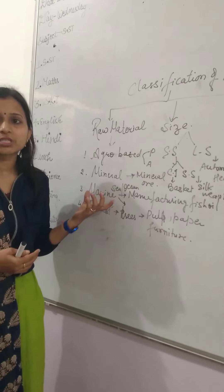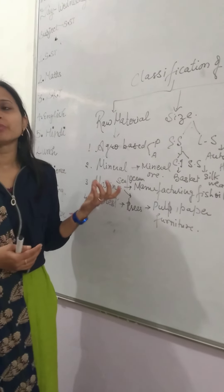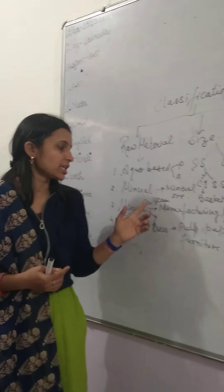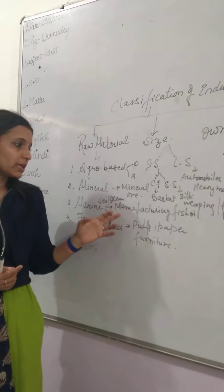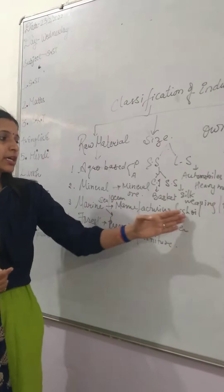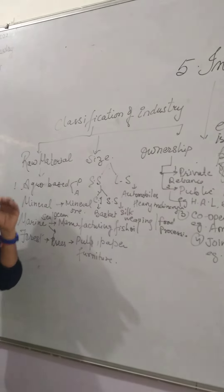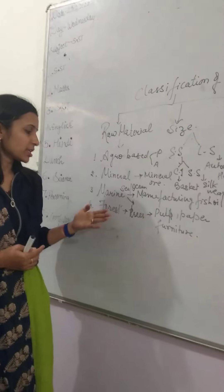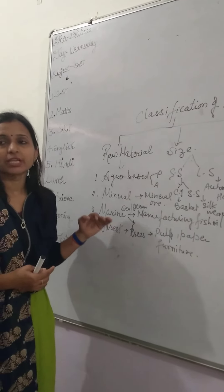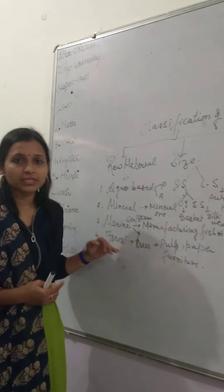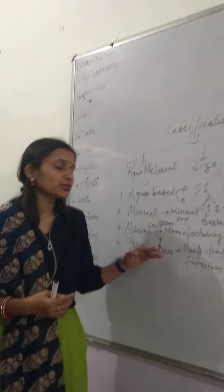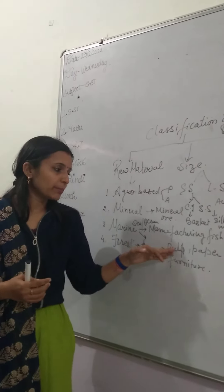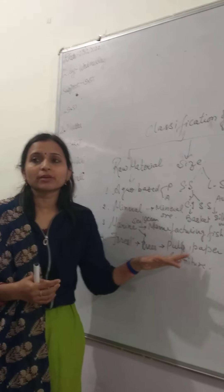The third is marine-based industries, which use raw material that we get from the sea or oceans. The fourth classification is forest-based industries. In this industry, the raw material used is what we get from trees, for example pulp, paper, and furniture.